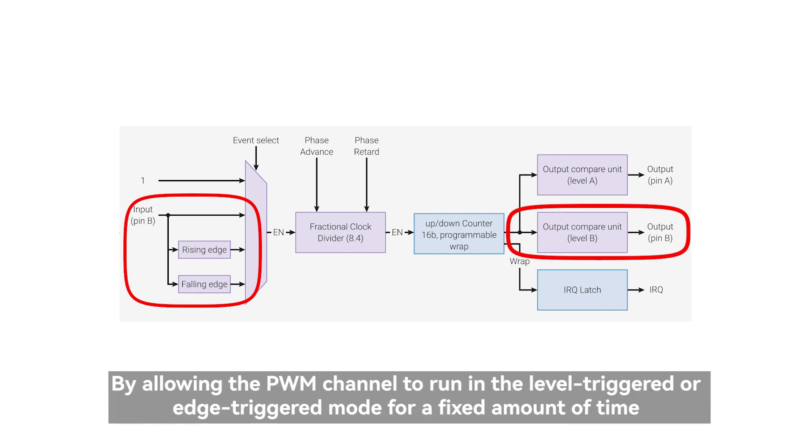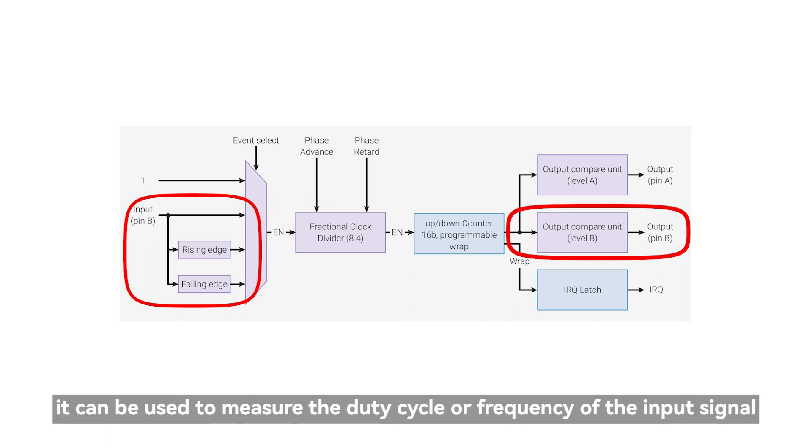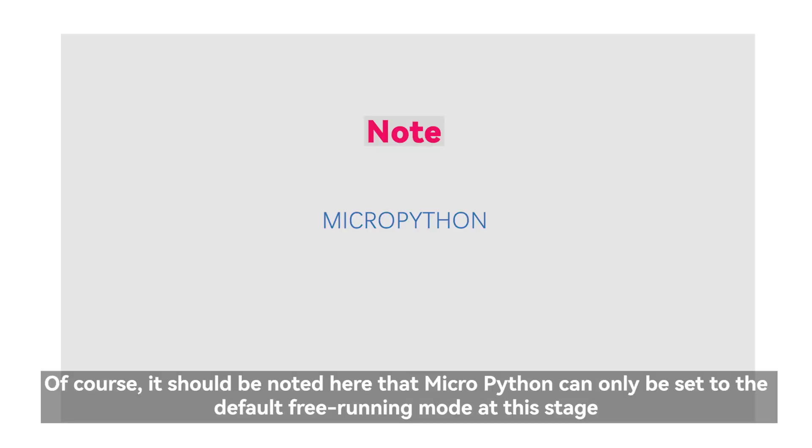By allowing the PWM channel to run in the level triggered or edge triggered mode for a fixed amount of time, it can be used to measure the duty cycle or frequency of the input signal. Of course, it should be noted here that MicroPython can only be set to the default free-running mode at this stage.